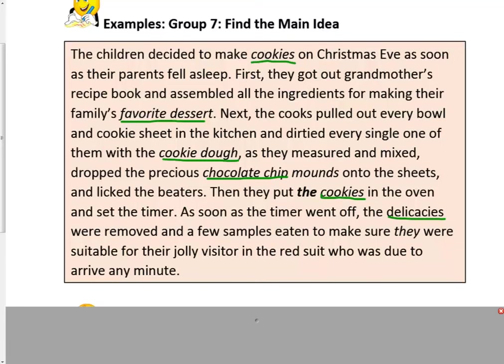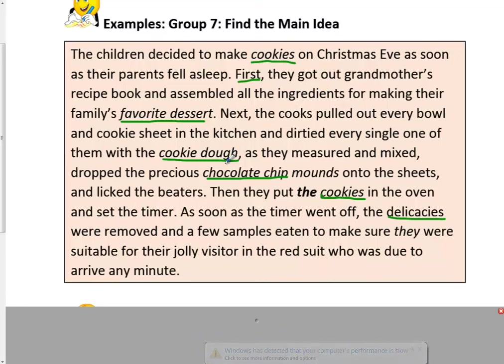Let's look at the sentences again to answer these questions. If we analyze these, we will see that the first sentence is actually more general, because it talks about children making cookies on Christmas Eve. Starting with sentence two, the next sentences are actually more specific — they're giving you specific supporting details about the steps the children took to make their cookies: from their grandmother's recipe, pulling out all the bowls, making the cookies, putting them in the oven, and baking them. Each of these supporting details has a special signal word to show you that another supporting detail is coming up.